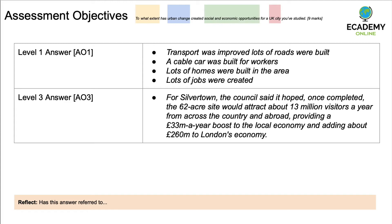You might be wondering what makes a level one answer — up to three marks on a nine mark question — versus a nine out of nine mark answer. A level one answer is typically very basic: the candidate might just say a cable car was built for workers or lots of homes were built in the area without establishing any key points or facts. For a level three answer it's far more detailed — for example, for Silvertown, the council said it hoped once completed this 62-acre site would attract about 13 million visitors a year, providing about £33 million a year boost to the local economy and adding about £260 million to London's economy itself. You can only write like this if you've been practising and if you've used your textbook and notes in advance before going into the exam.